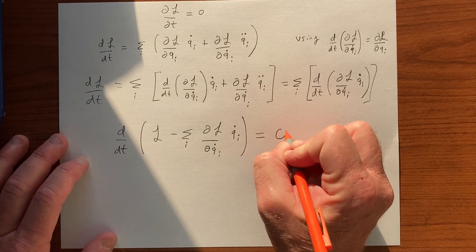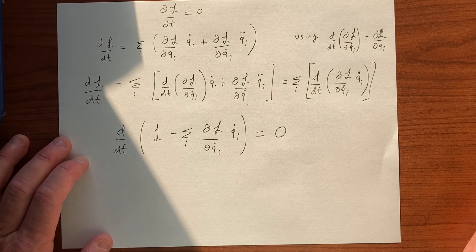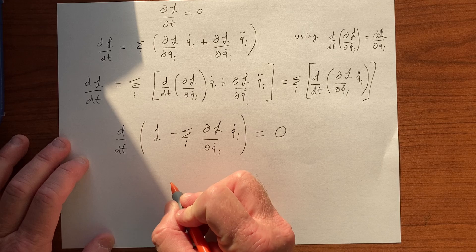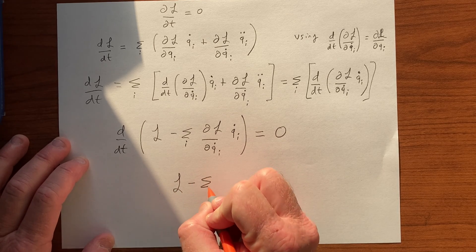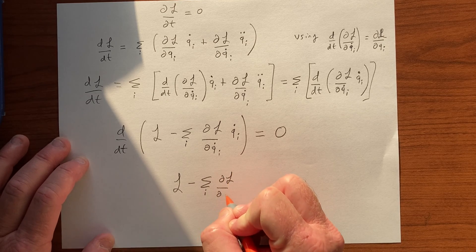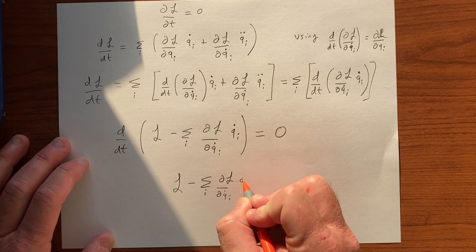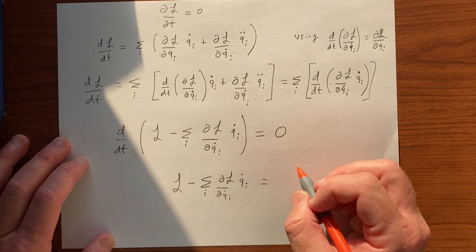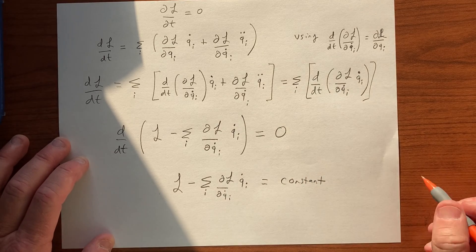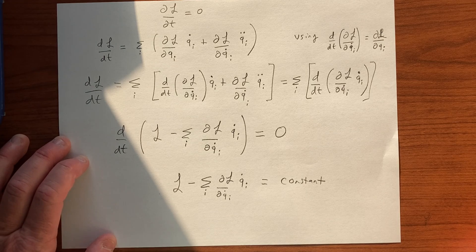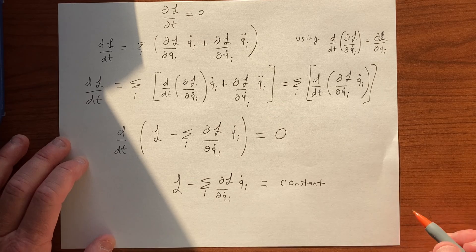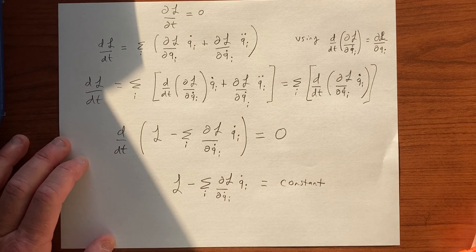That is equal to zero. And so we can say that L minus this quantity is some constant. It's the quantity that is constant in time, and we'll label this H or minus H.